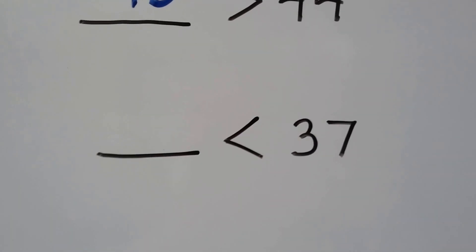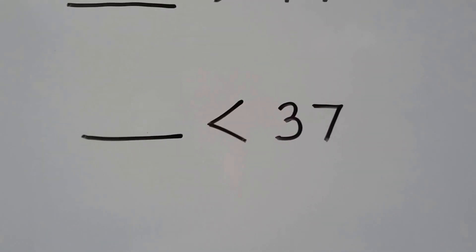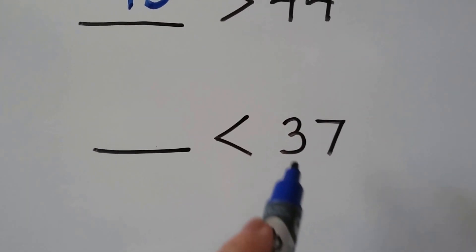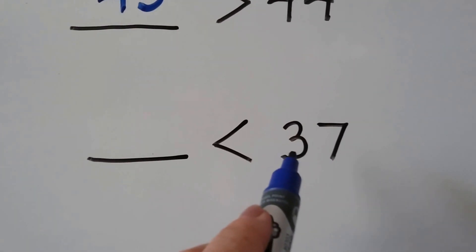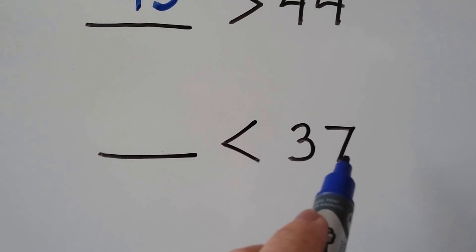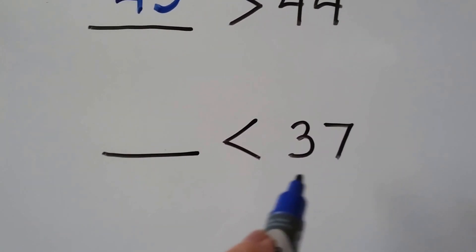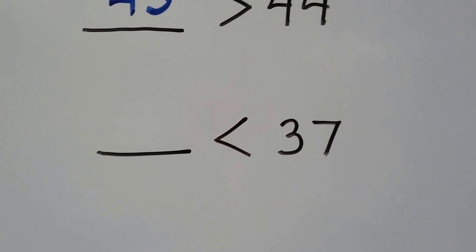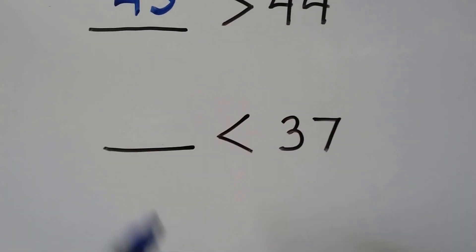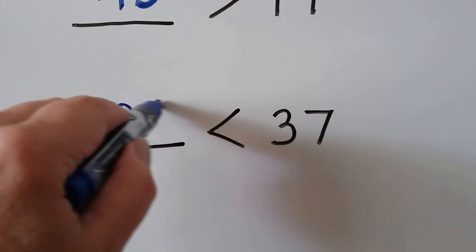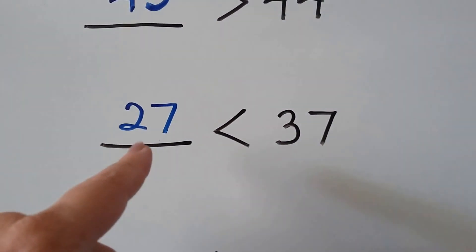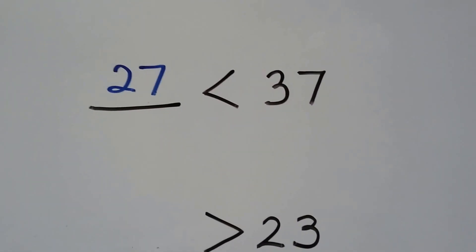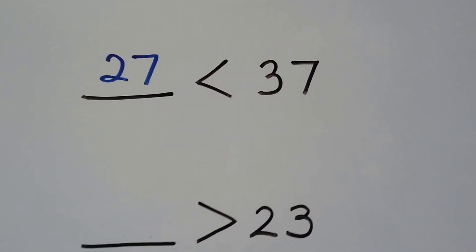Some number is less than 37. Well, if it has three tens, it would have to have less than seven ones in order to be less. Or it could have less tens. We could do 27 — that's only got two tens and that's got three tens. 27 is less than 37.